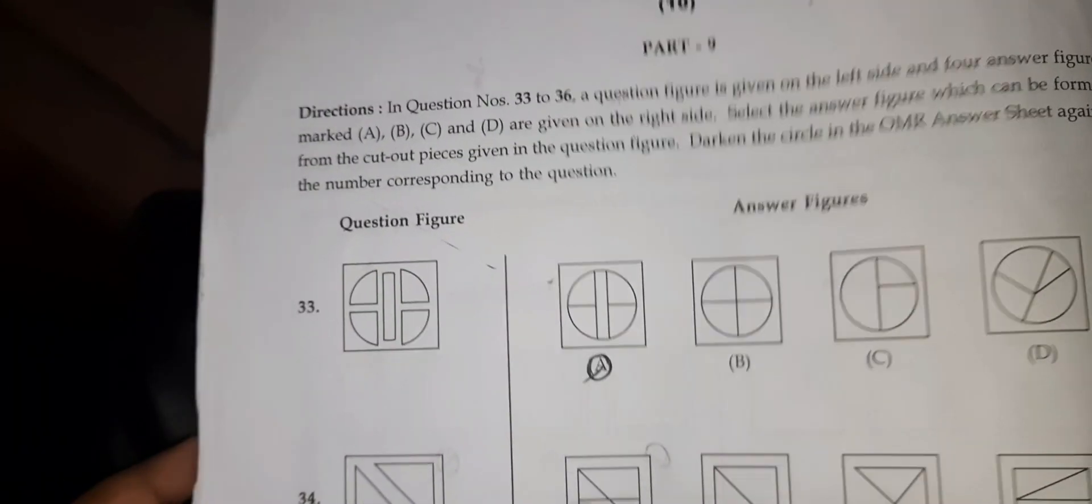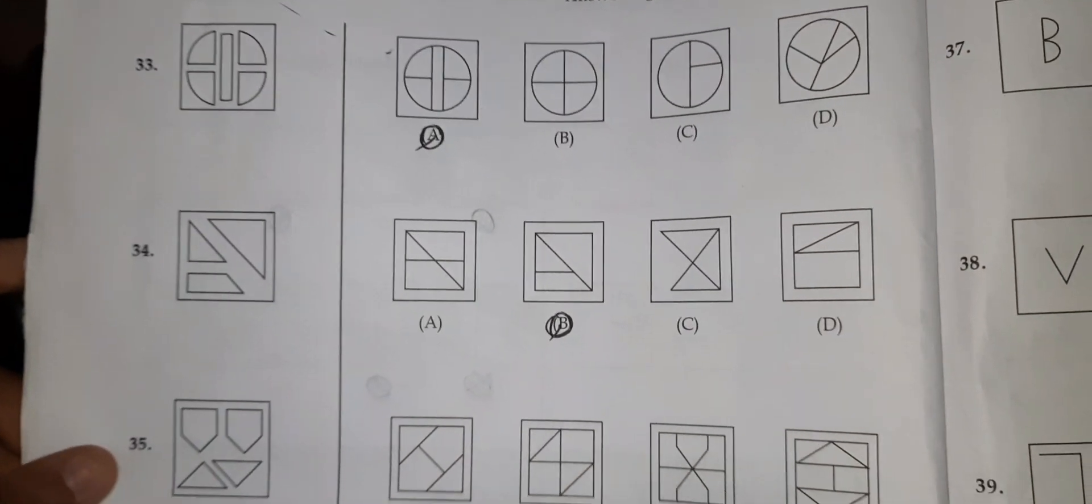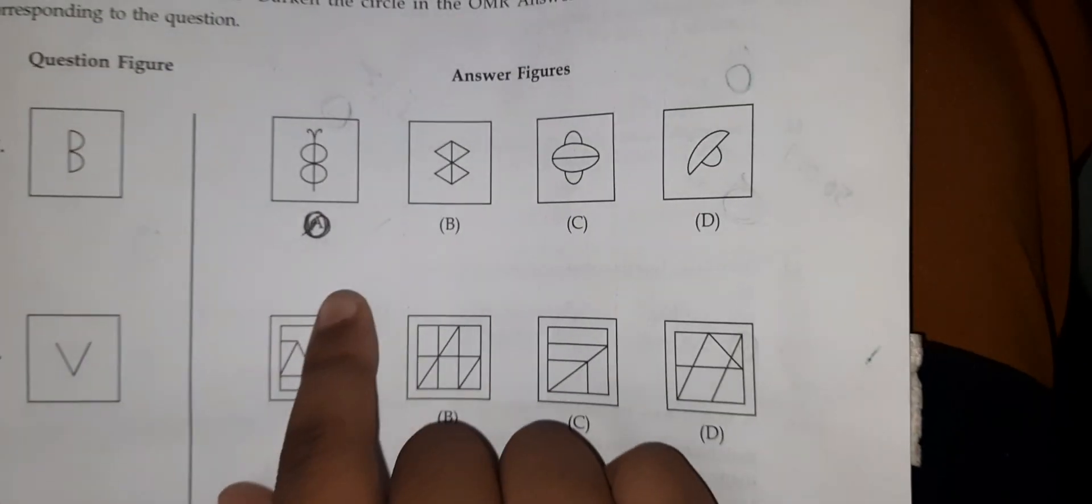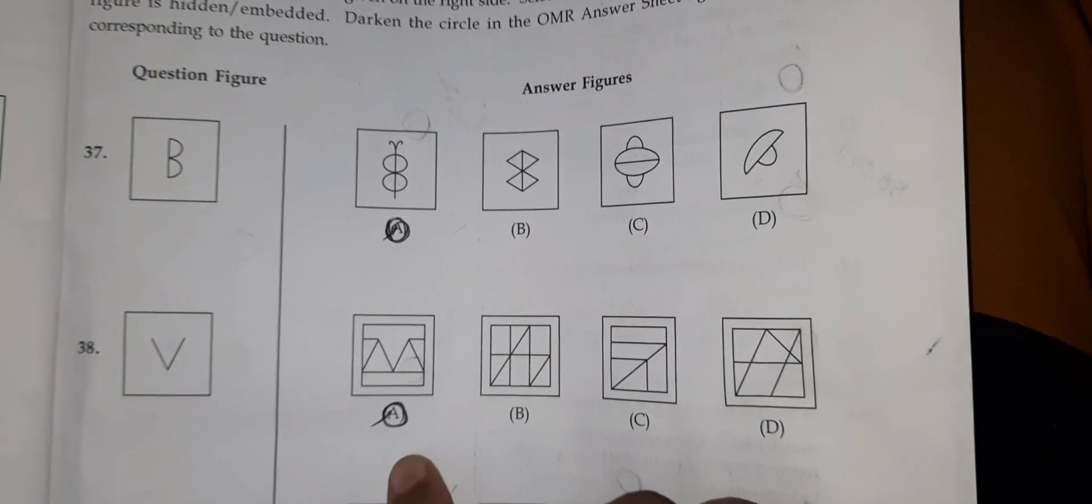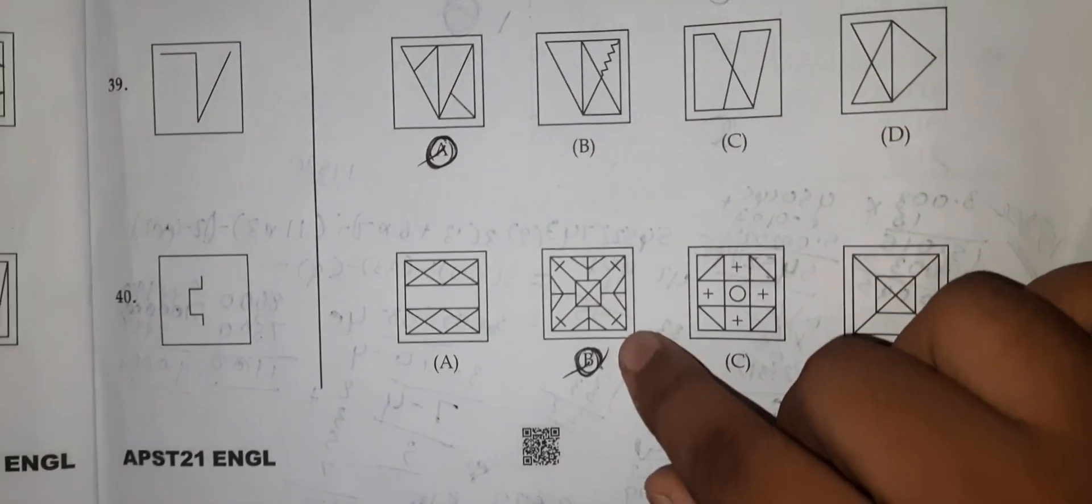33rd option A. 34th option B. 35th option A. 36th option A. 37th option A. 38th option A. 39th option A. 40th B.